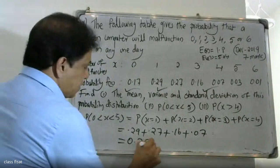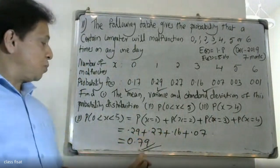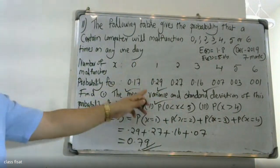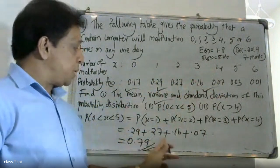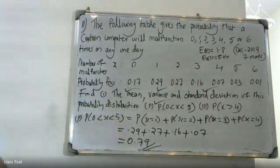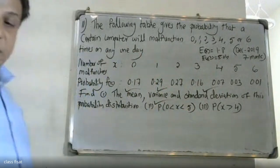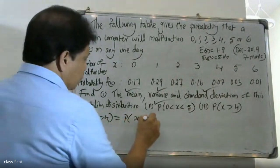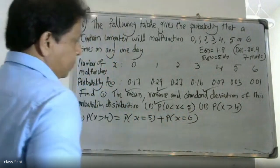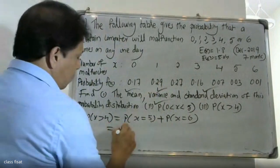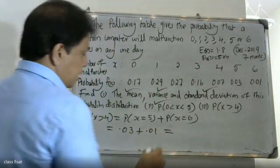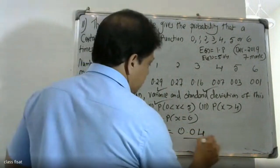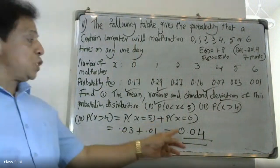The sum of probabilities for x greater than 4 gives 0.79. For X greater than 4, the answer is P(X > 4) = P(X=5) + P(X=6) = 0.03 + 0.01 = 0.04. So the probability of X greater than 4 is 0.04.